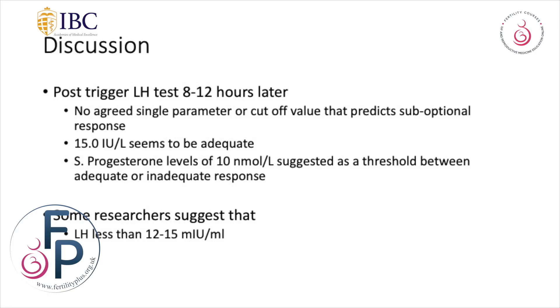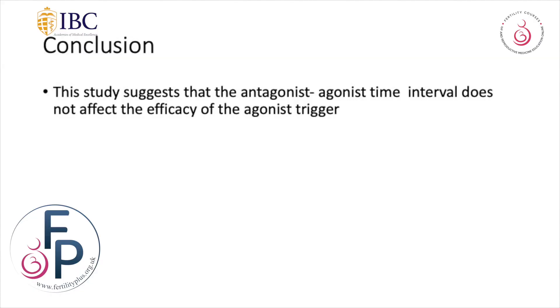Eight to 12 hours later, what is the ideal LH level? We think that 15 seems to be adequate, and serum progesterone of more than 10 nanomoles suggests a threshold between adequate and inadequate. Some researchers also suggest that the LH level 12 hours later should be between 12 and 15 milli-international units per ml. This study tells us that the time interval between giving an antagonist and agonist trigger does not really matter — the entire concept of keeping a 12-hour interval doesn't hold. Be careful with very lean women and women on long-term OC pills, as that is where you may see an inadequate LH response.